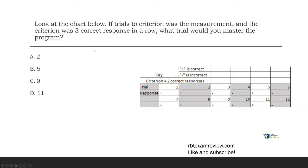Okay, sticking with the same chart. Look at the chart below. So, if trials to criterion was the measurement and the criterion was three correct responses in a row, what trial would you master the program? We switched it up. No longer are we looking at percentage of occurrence. We're now looking at trials to criterion. What does trials to criterion mean? It means we set a mastery criterion, a mastery requirement.